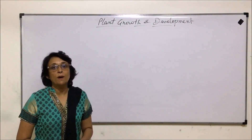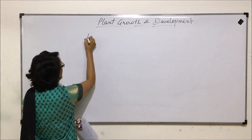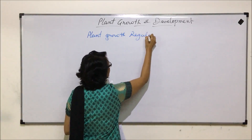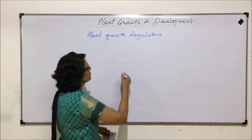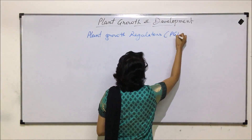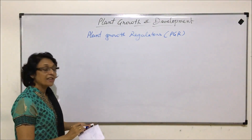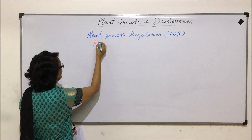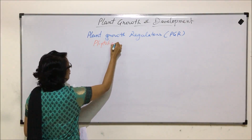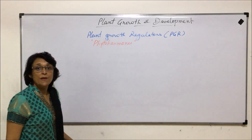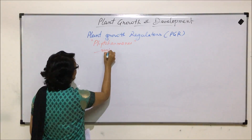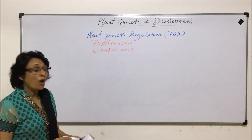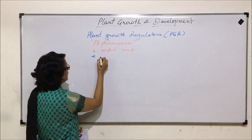In this video we are talking about plant growth regulators. The abbreviation used for this term is PGR. Basically we are talking about phytohormones — those chemicals which are produced by the plants. Phytohormones are simple compounds with small molecular weight.